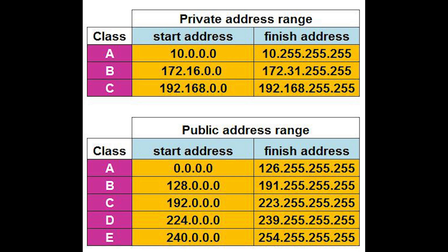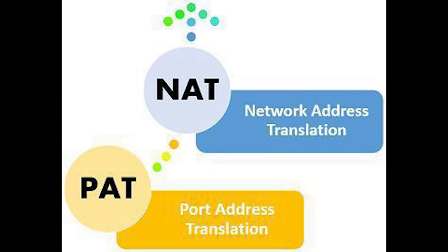Class A addresses are for networks with a large number of total hosts. Class B addresses are for medium to large size networks. Class C addresses are used in small local area networks. Class D is not allocated to hosts and is used for multicasting, while Class E is reserved for research purposes. RFC 1918 was a solution to expand the usable number of IP addresses and prevent exhaustion of public IPs before the adoption of IPv6.